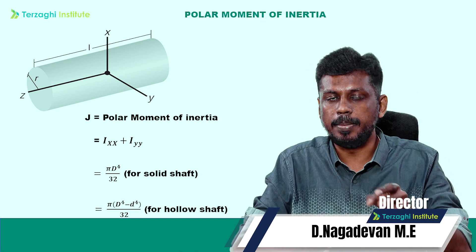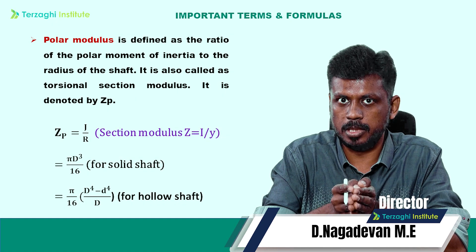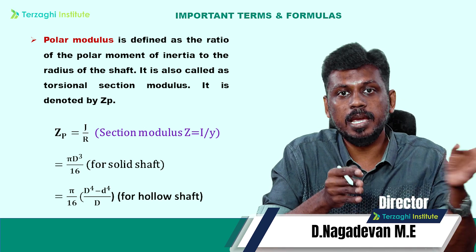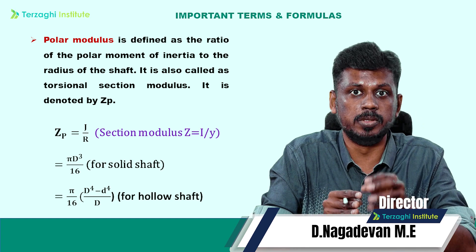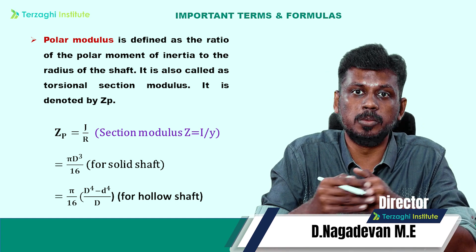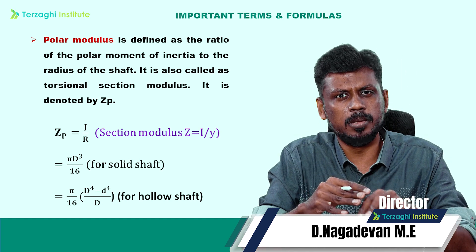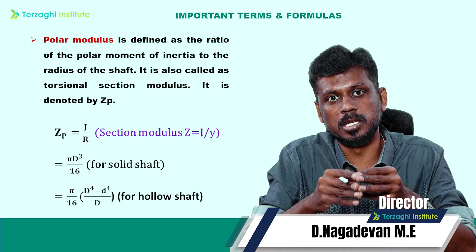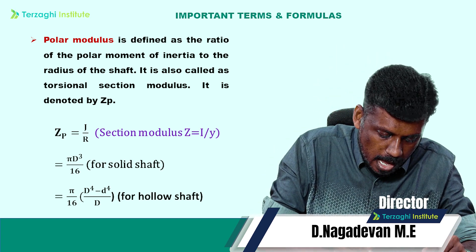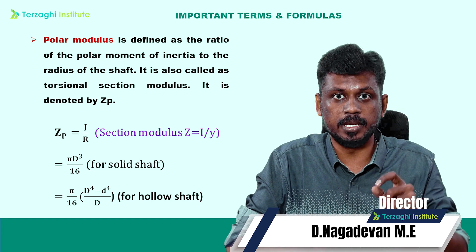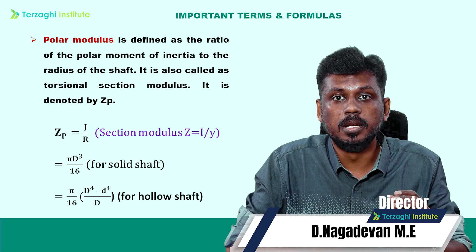For a hollow shaft, J involves capital D and small d. The polar modulus — similar to section modulus Z = I/Y in bending — for torsion is J/R. The polar modulus is defined as the ratio of polar moment of inertia to the radius of the section. For a solid shaft, J = πD⁴/32 divided by R = D/2, which gives πD³/16.